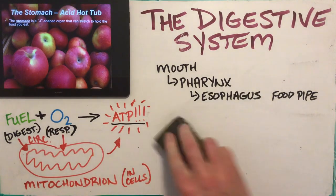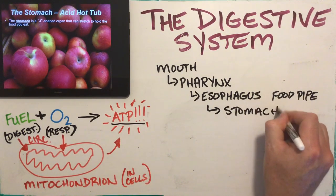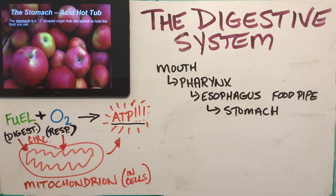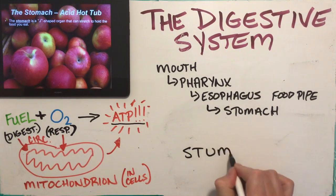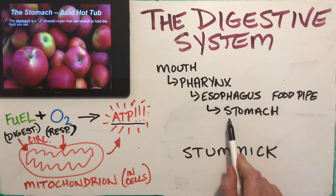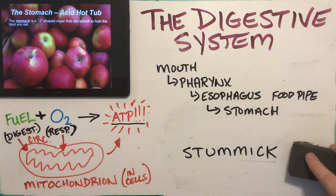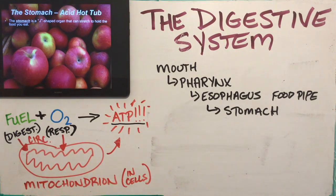After the esophagus we get down into the stomach. I call it the 'sto-match' so students spell it correctly — I once had a student write 'stumick' in Grade 11. If you say 'sto-match' it gets in your head and you'll remember how to spell it: S-T-O-M-A-C-H. The stomach is a J-shaped organ; food is usually in there for a couple of hours. It contains hydrochloric acid and some enzymes.